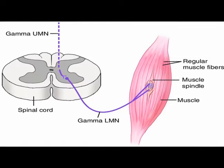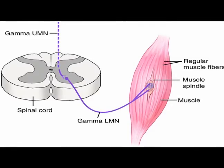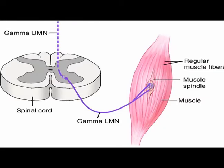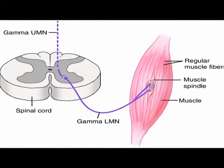Muscle spindles are mechanical receptors located in striated muscle. They are responsible for the stretch reflex, and when stimulated they produce a muscle contraction.